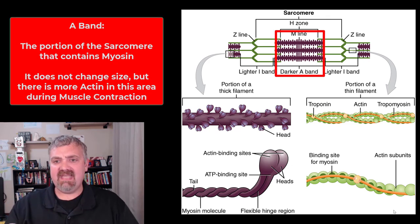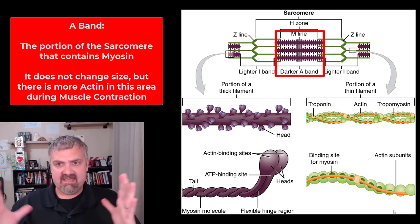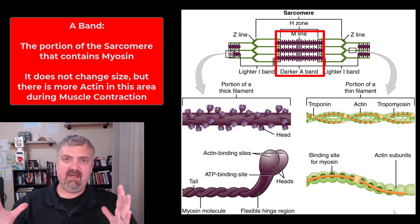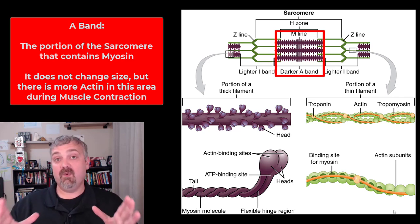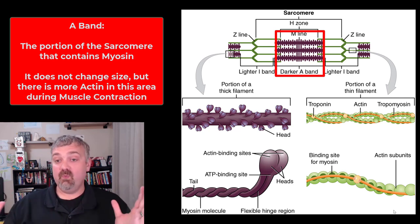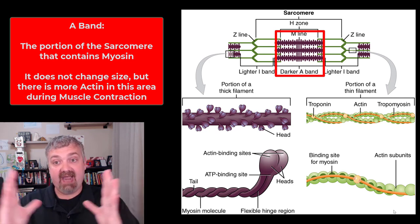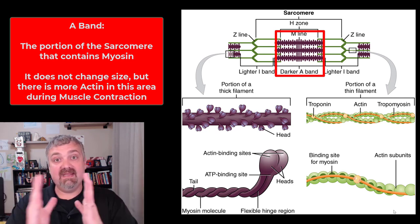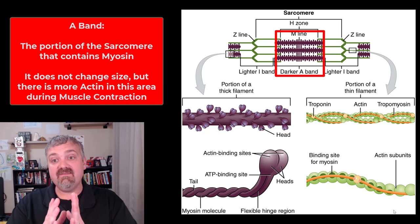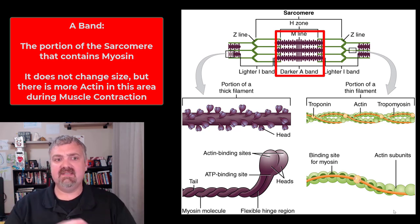Lastly, we have the A band. The A band is the entire area in a sarcomere where there will be thick filaments — the myosin. This will not change in size during contraction, because yes, actin is going to come and lay over top of the myosin thick filament, but the myosin itself isn't changing length. So the A band will not change size.